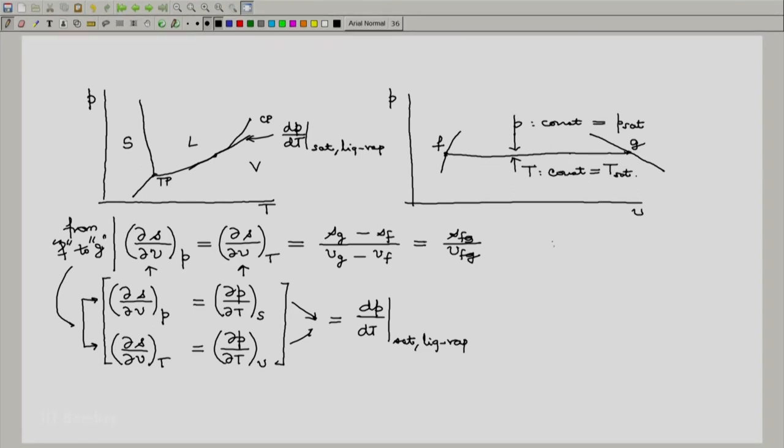Now all that we have to do is use the right hand side of equation 1 and the right hand side of equation 2. And note that the left hand sides are equal, hence the right hand sides should also be equal. And if you do that you will get this relation: dp by dt along the saturation line, the liquid vapor saturation line is Sg minus Sf divided by Vg minus Vf. This can also be written down as Sfg divided by Vfg. This is one form of the Clausius-Clapeyron equation.